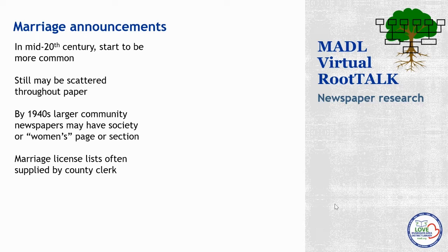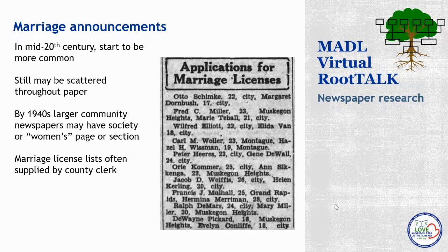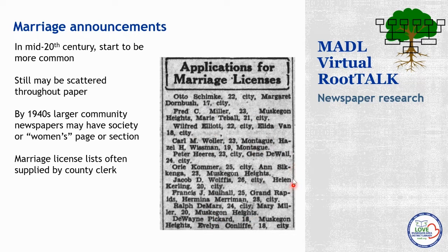Here's a list of applications for marriage licenses published in the May 19th, 1928 edition of the Chronicle. We get each party's name and age, and whether they lived in the city of Muskegon, Montague, or Muskegon Heights. It's a nice list and a great starting point — we get both the bride and groom's names and a rough idea of a date, so we can start looking for a marriage announcement in the paper or looking for the actual marriage license or certificate in county records.